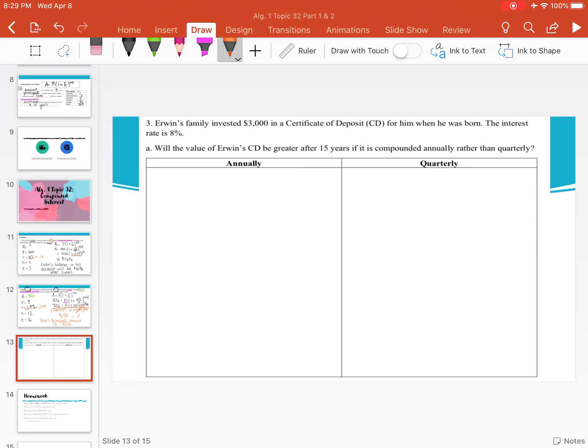Moving on to the last example. Irwin's family invested $3,000 in a certificate of deposit, also known as a CD, not like the actual disc, but for him when he was born. The interest rate is 8%. So we have a lot of information right here. We know the family initially invested $3,000, so that's our principal amount. And we know the interest rate is 8%.